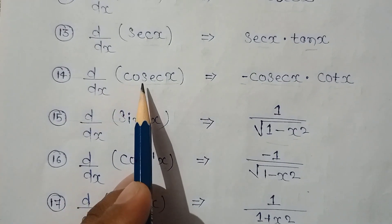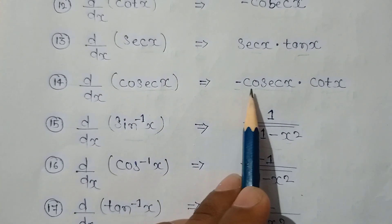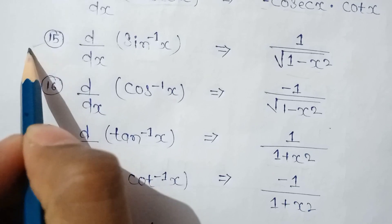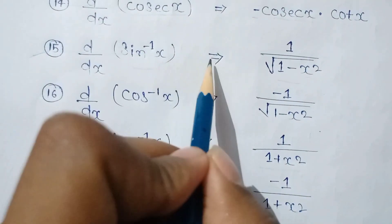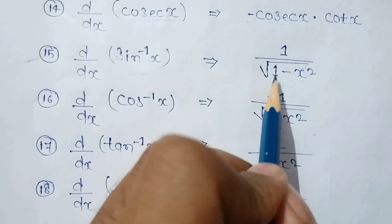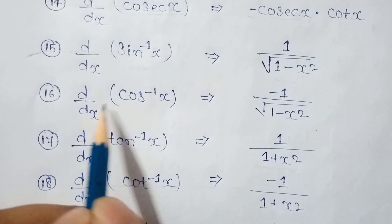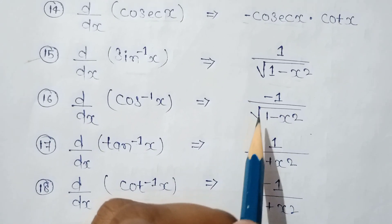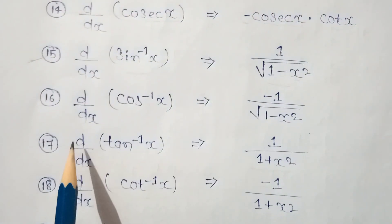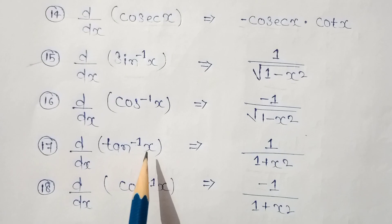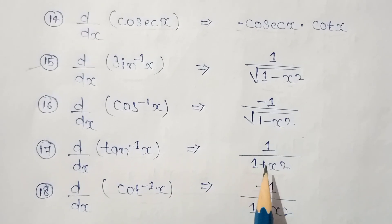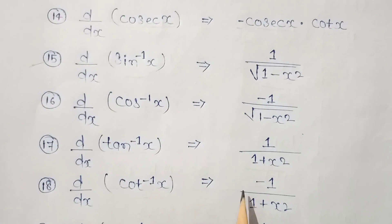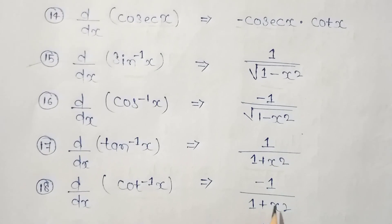d by dx of sin inverse x is equal to 1 upon root under 1 minus x square. d by dx of cos inverse x is equal to minus 1 upon root under 1 minus x square. d by dx of tan inverse x is equal to 1 upon 1 plus x square. d by dx of cot inverse x is equal to minus 1 upon 1 plus x square.